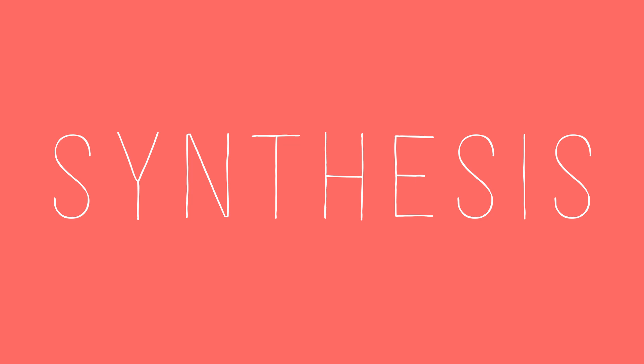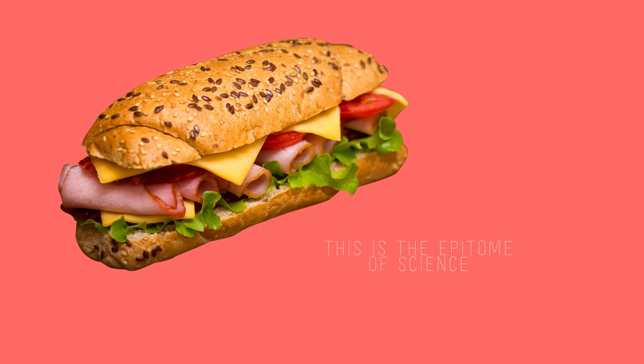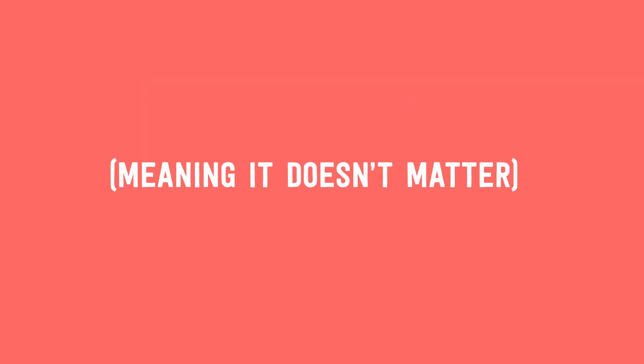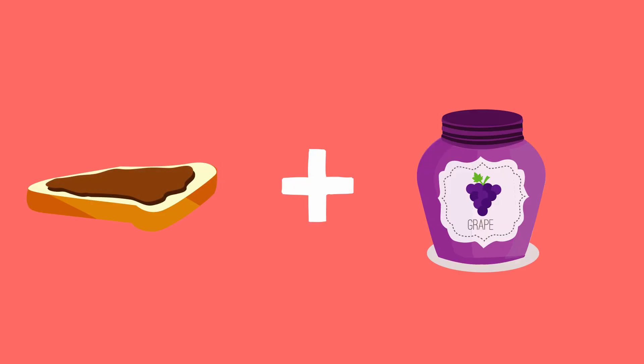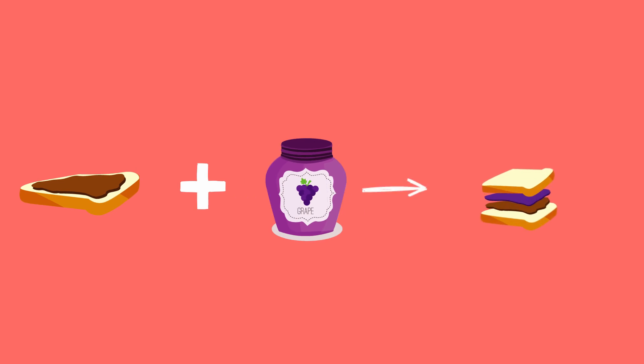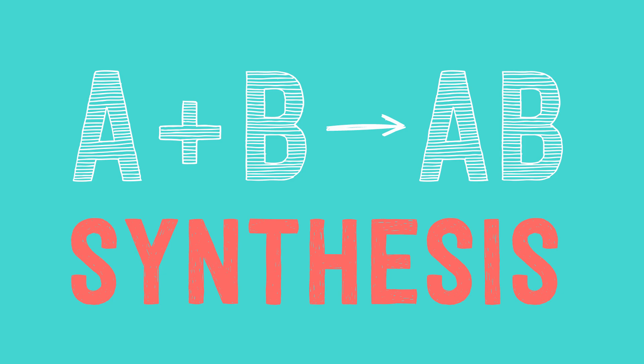First up on the menu is synthesis. In science, to synthesize means to make. So synthesis is just making things, like a sandwich. For this video, let's just say that the bread is kind of like a beaker. Here's some bread with peanut butter on it, and now here's some jelly. And now, wait for it — it's a peanut butter and jelly sandwich. Wow, who'd have guessed? Any two elements combined with each other to make a single product is a synthesis reaction.